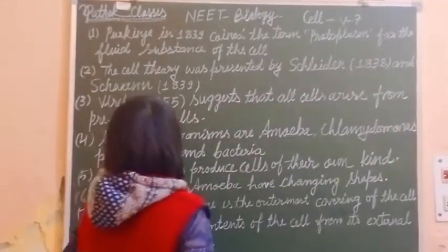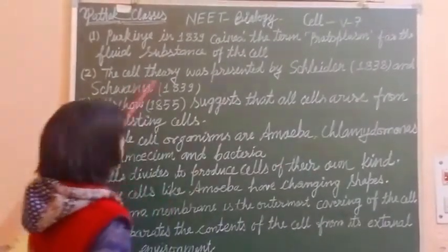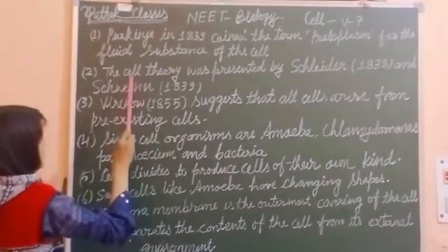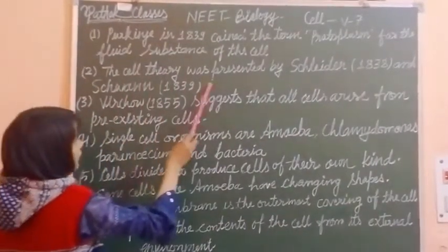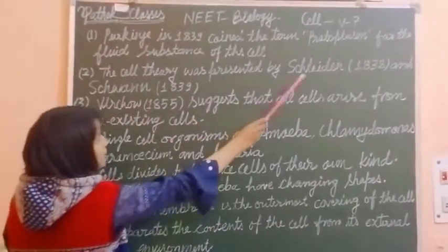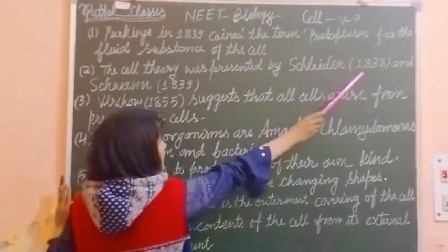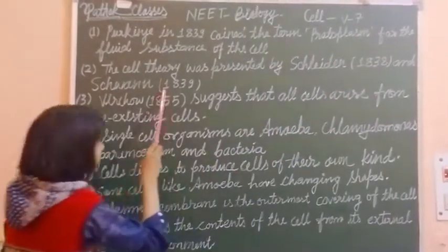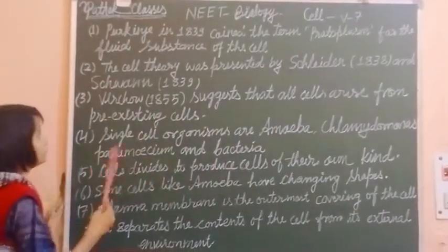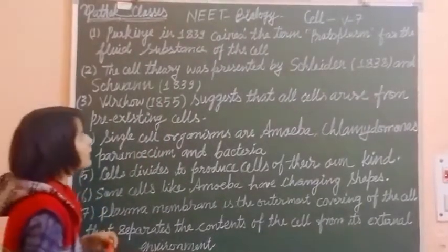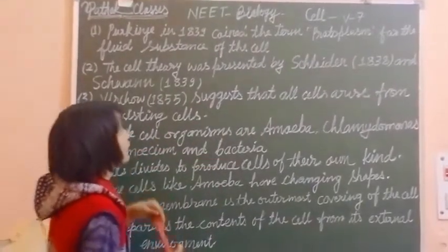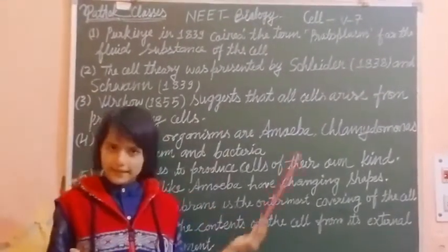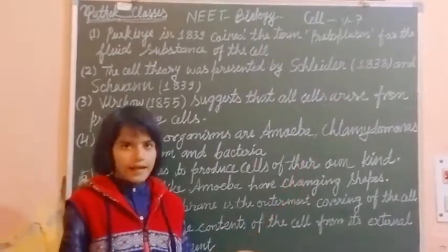So next, point number 2. The cell theory was presented by Skelvon in 1838 and Skelvon in 1839.